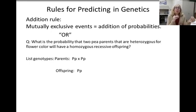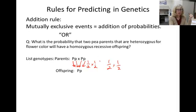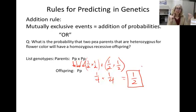In some cases, you're considering multiple mutually exclusive events. In this situation, you add the probabilities of each. If we change the question to ask what's the probability of having a heterozygous offspring, there are two different ways to achieve this. Mom can give the big P and dad can give the little p — the likelihood is one half times one half. Or mom can give the little p and dad can give the big P — also one half times one half. Because we'll accept either outcome, we add these together, giving a probability of one over two.